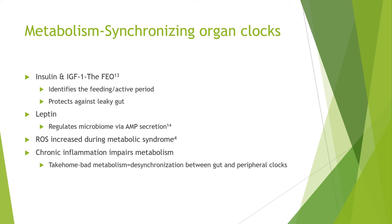Finally, chronic inflammation impairs metabolism throughout the body. The take-home message here is: if you have bad metabolism, there's no way you're going to synchronize the microbial clock to the rest of the clocks, because you're effectively impairing the ways that the gut and peripheral clocks synchronize with one another. Since a lot of what the microbiome is doing is communicating to the gut clock as an intermediary between itself and the peripheral clocks, you need to address metabolism — otherwise, you're not going to be able to synchronize your microbial clock to the rest of your body.